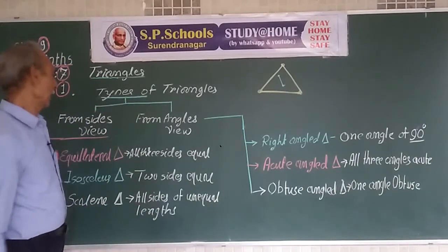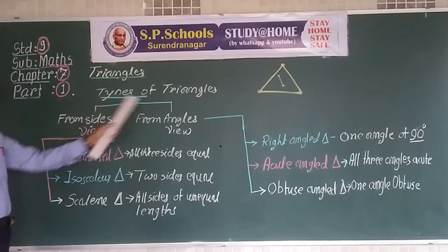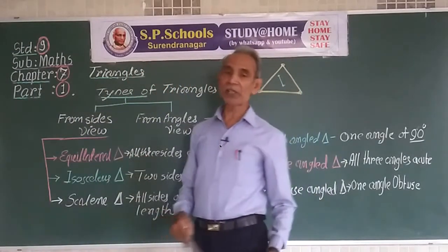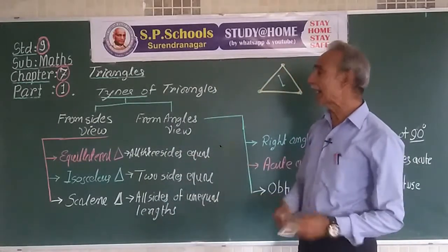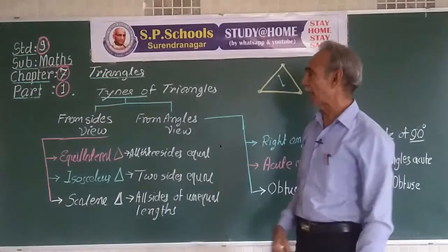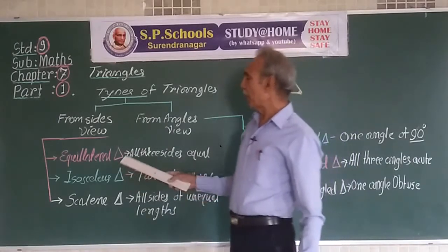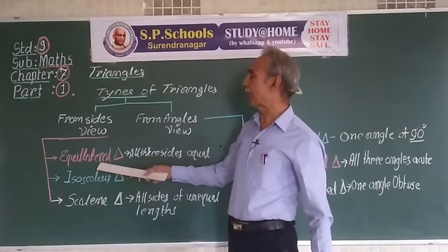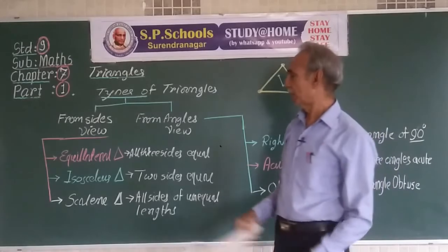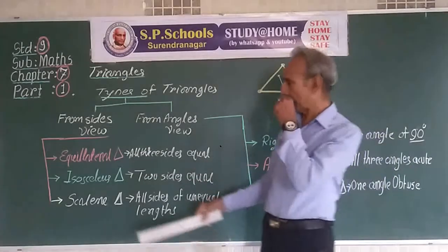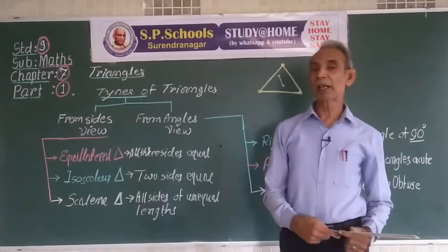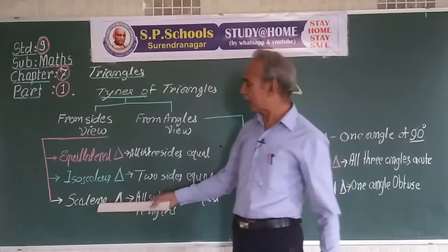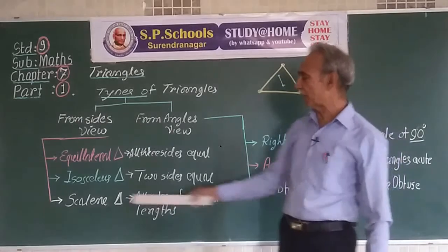Now, about the types of triangles. Triangles can be classified in two ways: by looking at the sides or by looking at the angles. If all three sides are equal in length, the triangle is called an equilateral triangle. If two sides are equal and the third is different, we call it an isosceles triangle. If all three sides are of different lengths, we call it a scalene triangle.